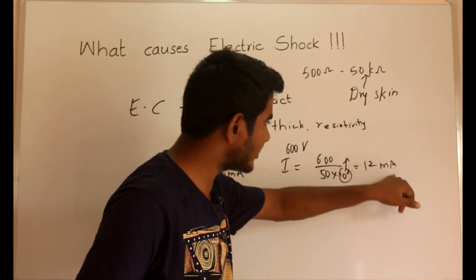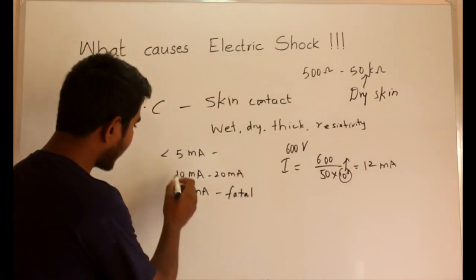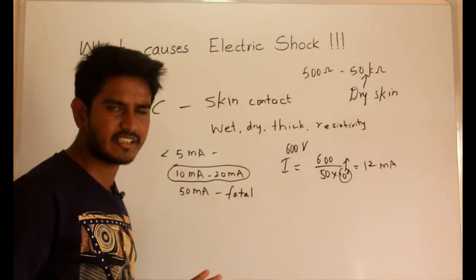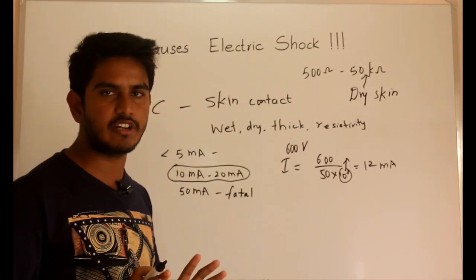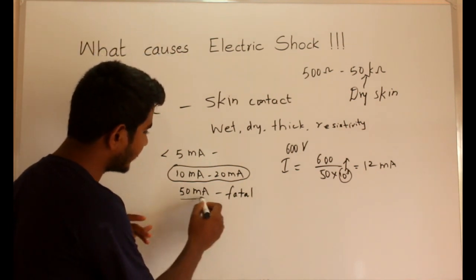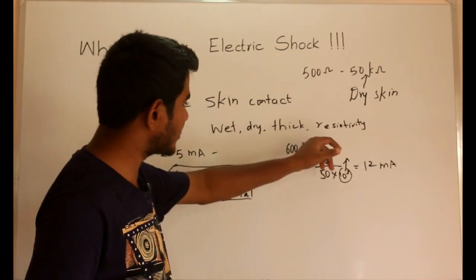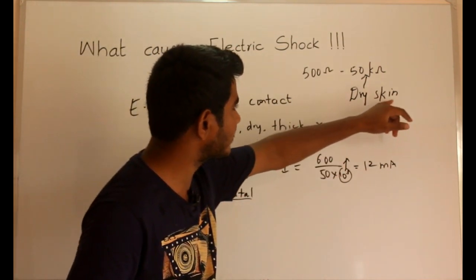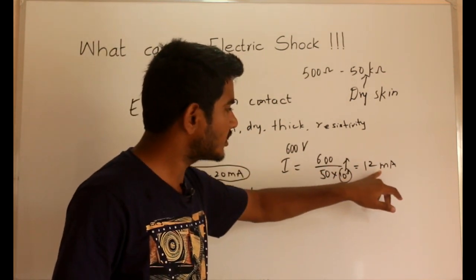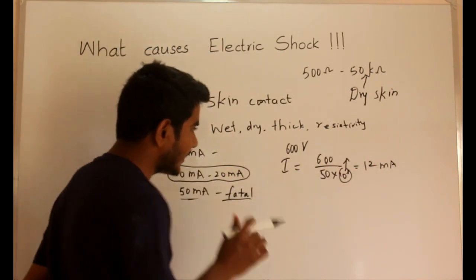That gives us 12 milliamperes. So with a 600 volt line and dry skin, you will experience 12 milliamperes. This is not fatal, because currents between 10 milliamperes and 20 milliamperes are potentially dangerous — the victim loses muscular control — but they are not fatal. The consequences become fatal only when the current exceeds 50 milliamperes. So a 600 volt line with dry skin may not be a fatal situation.